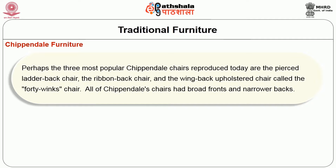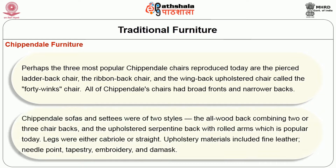Chippendale sofas and settees were of two styles: the all-wood back combining two or three chair backs, and the upholstered serpentine back with rolled arms, which is popular today. Legs were either cabriole or straight. Upholstered materials included fine leather, needlepoint, tapestry, embroidery, and damask.